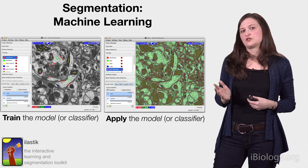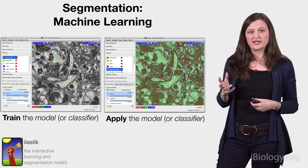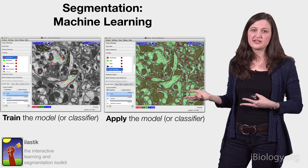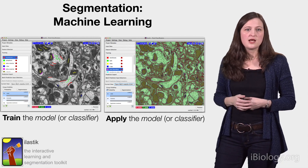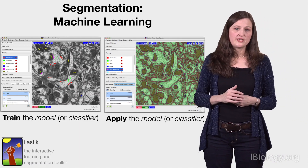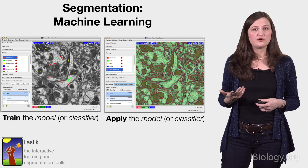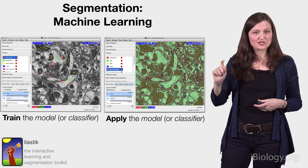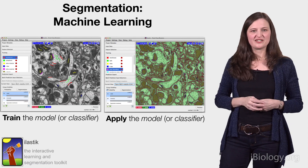Some downsides of using supervised machine learning are that it takes some time to do the training, and you might need to retrain on each individual batch of images if you have some technical variations. But these algorithms are very powerful, and they don't require much background knowledge of how the image processing is working. All you're doing is clicking pixels and scribbling on the image, and it just sort of magically learns what you need it to learn.